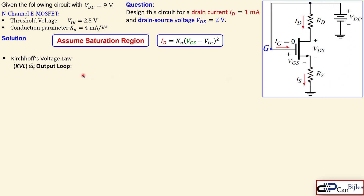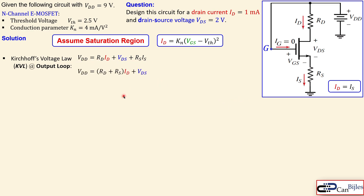Applying Kirchhoff's Voltage Law at the output loop, VDD equals the voltage across RD plus VDS plus the voltage across RS. Since the gate current is zero, ID and IS are equal, so we can combine RD and RS and rewrite the equation as VDD equals (RD + RS) times ID plus VDS.